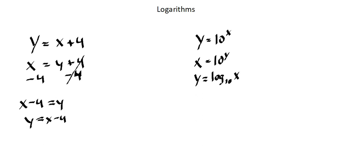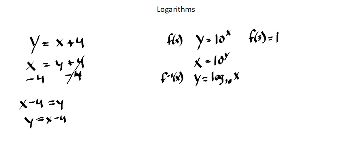Let's look at an example. The original function f(x) equals 10 to the power of x, and the inverse f⁻¹(x) equals log base 10 of x. Let's select an input for the original function: f(3). I'm going to input the value of 3 everywhere I have an x, so 10 to the power of 3 equals 1000. When the x value is 3, the y value is 1000.